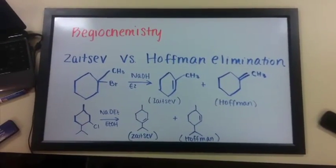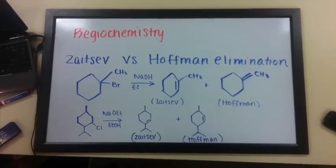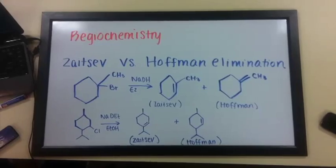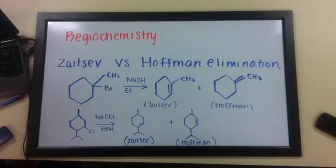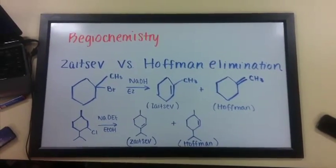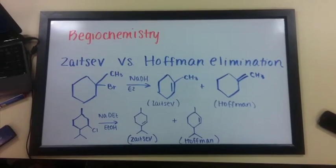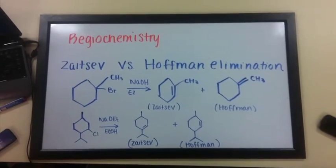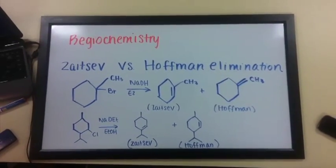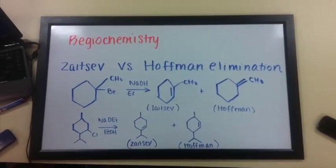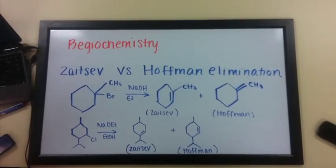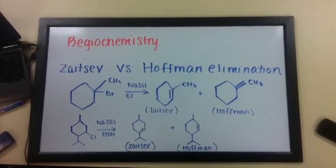Let's dive deeper into regiochemistry. General examples of where regiochemistry can be observed are in Zaitsev vs. Hoffman Elimination, Markovnikov vs. Anti-Markovnikov Addition, Ortho vs. Para, and Meta Substitution, and others that we will learn about later.